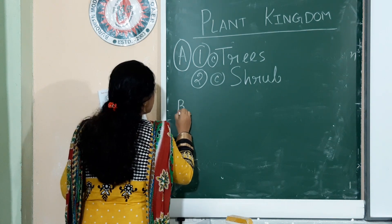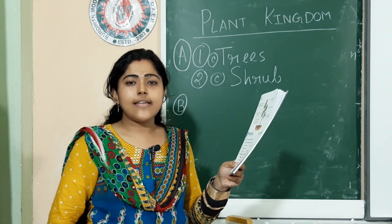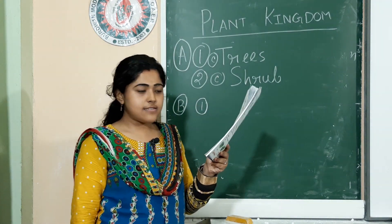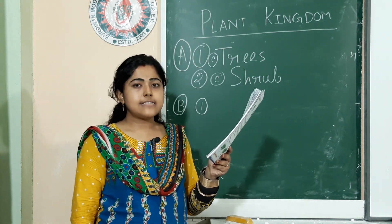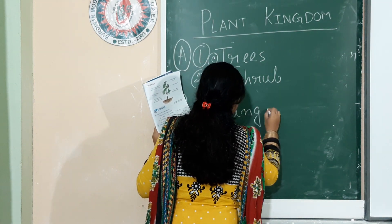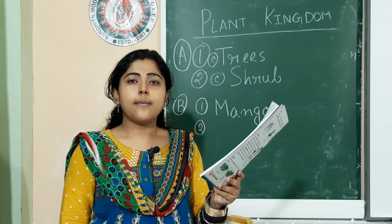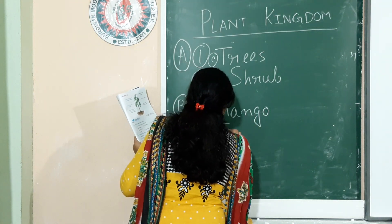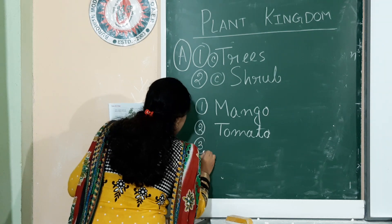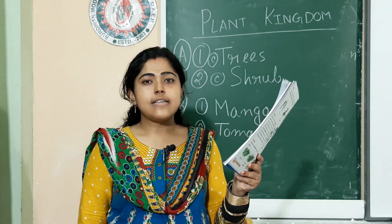Come to question number B. This has unarranged words and you have to rearrange them. Question 1 answer is mango. Question 2 answer is tomato. Question 3 answer is cotton.